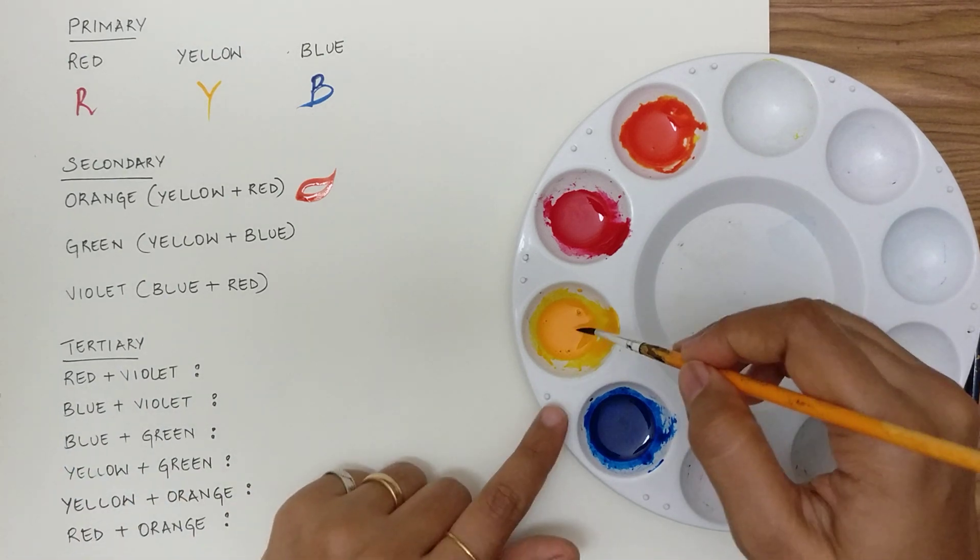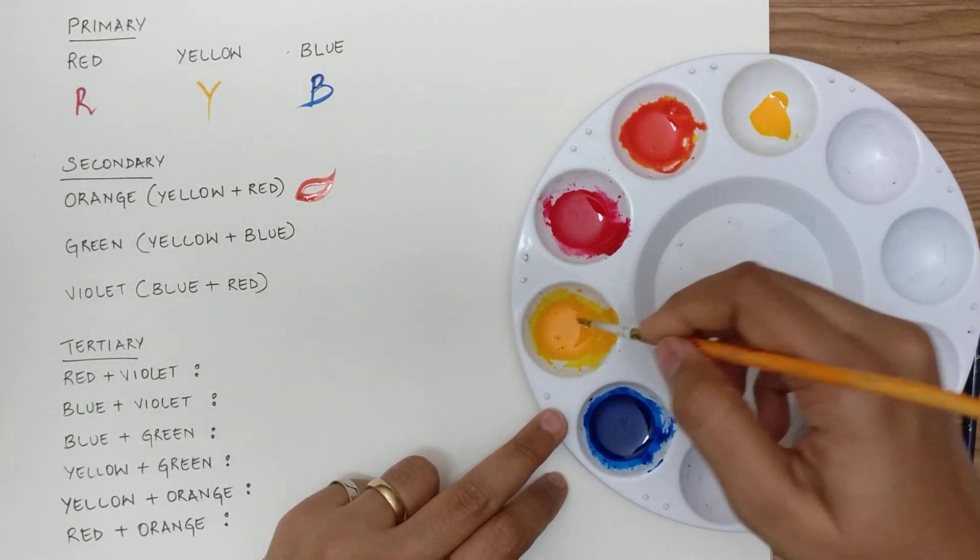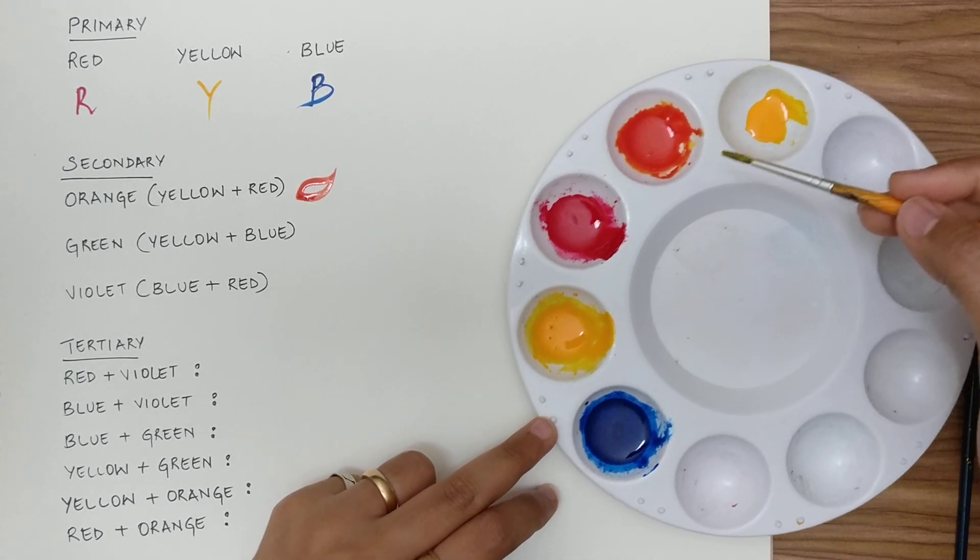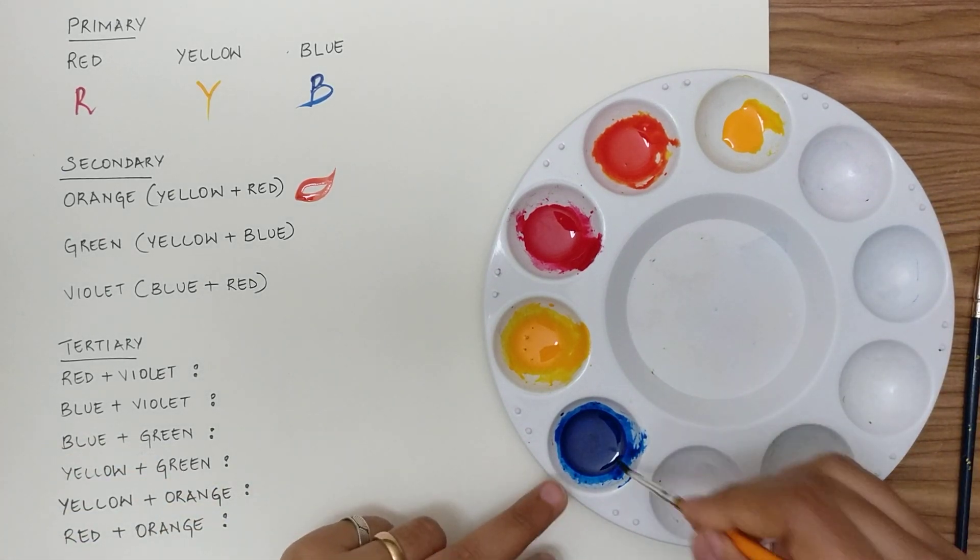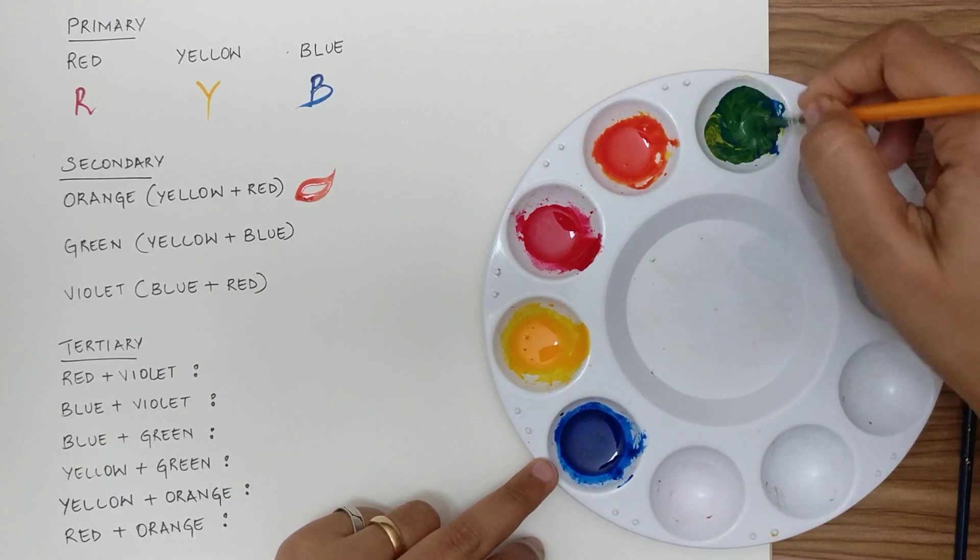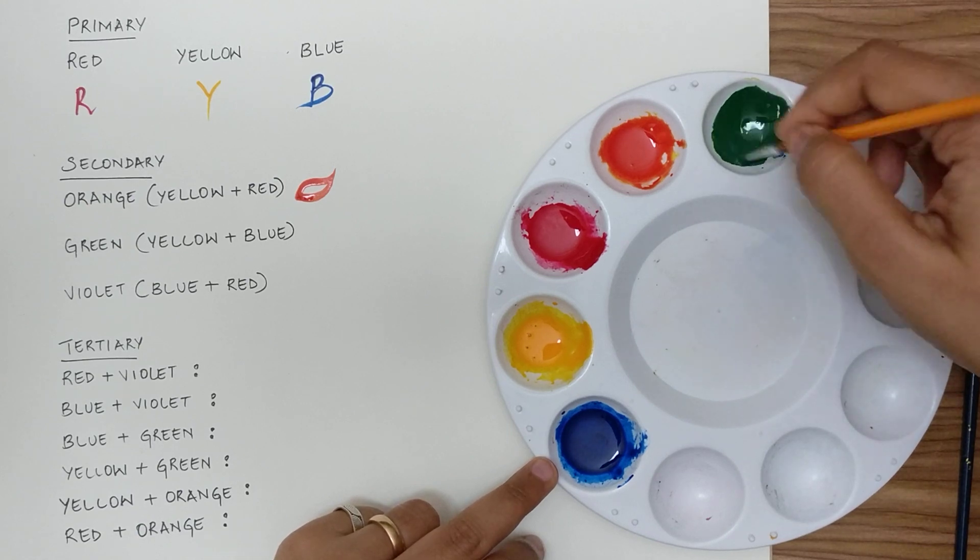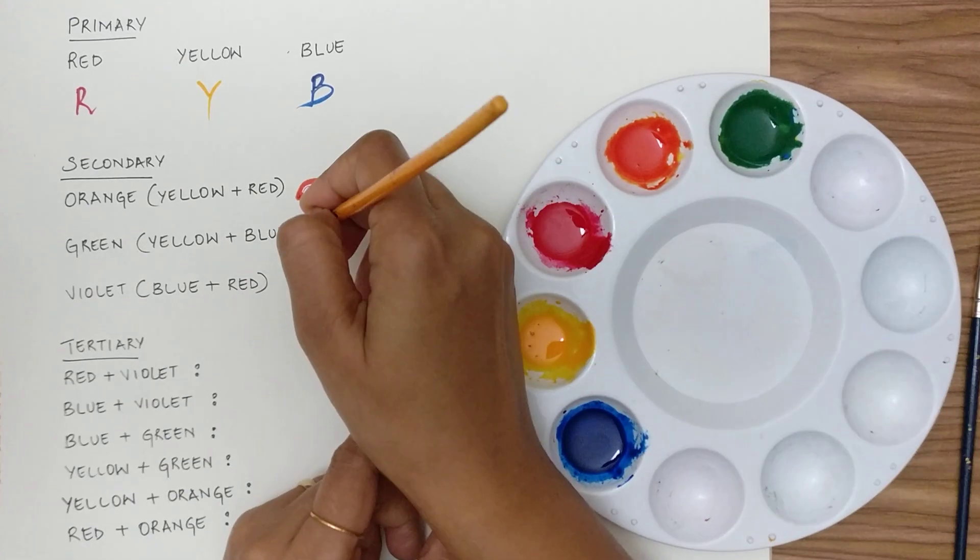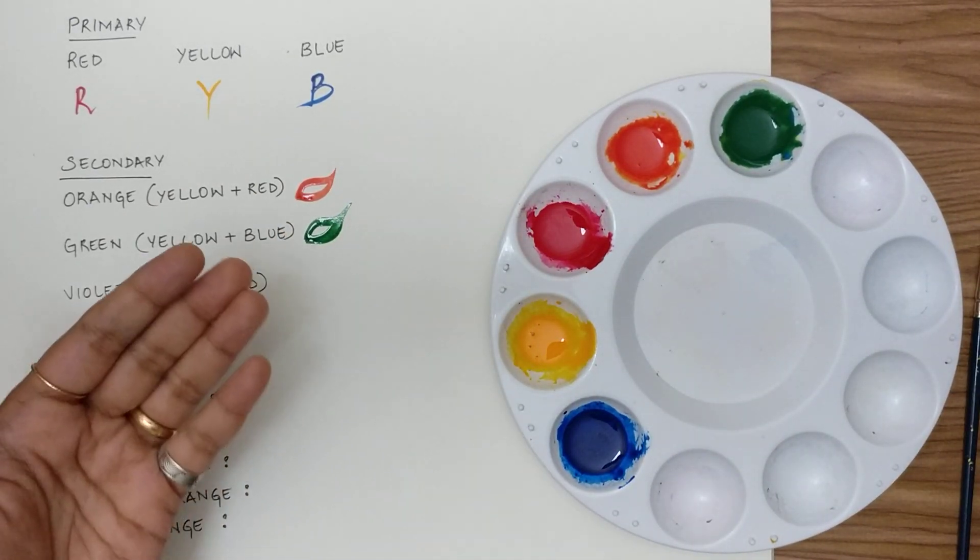When I combine yellow and blue, it gives me a green color.